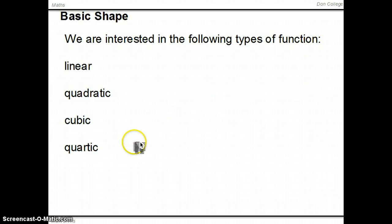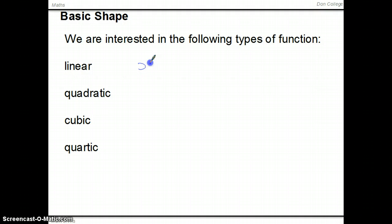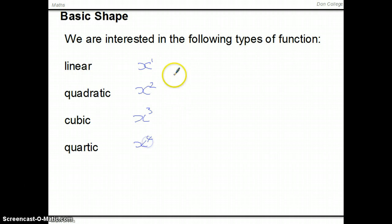We're interested in these functions: linear, quadratic, cubic and quartic. Linear means that the highest x term is x to the power of one, which is usually just written as x. Quadratic means that the highest power is two, cubic means the highest power is three, and quartic means the highest power is four.